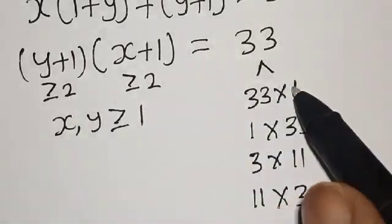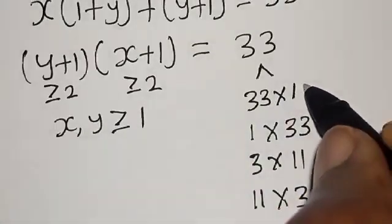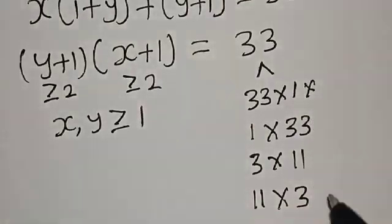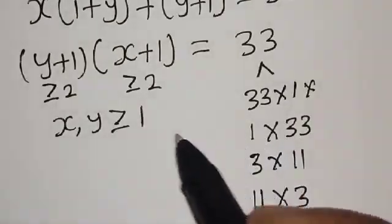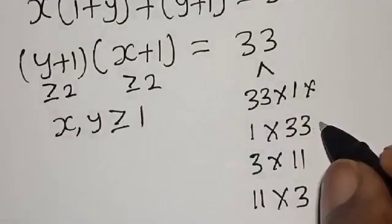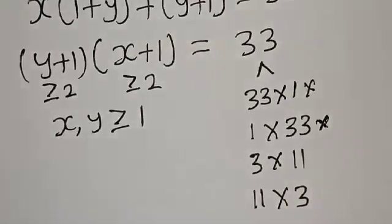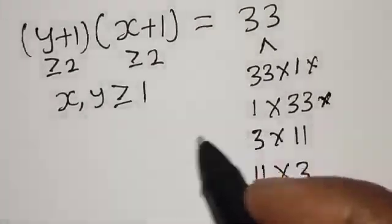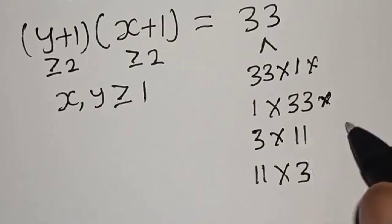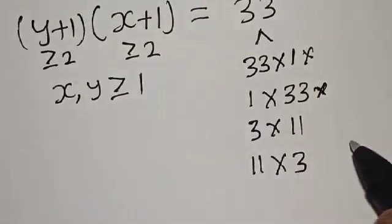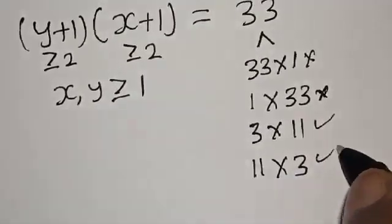Since y plus 1 and x plus 1 must both be greater than or equal to 2, we eliminate pairs containing 1. The pair 1 times 33 is invalid because 1 is less than 2, so we cancel it. The pair 33 times 1 is also invalid for the same reason, so we cancel it too. The pair 3 times 11 is valid since 3 and 11 are both greater than 2, so we accept this.